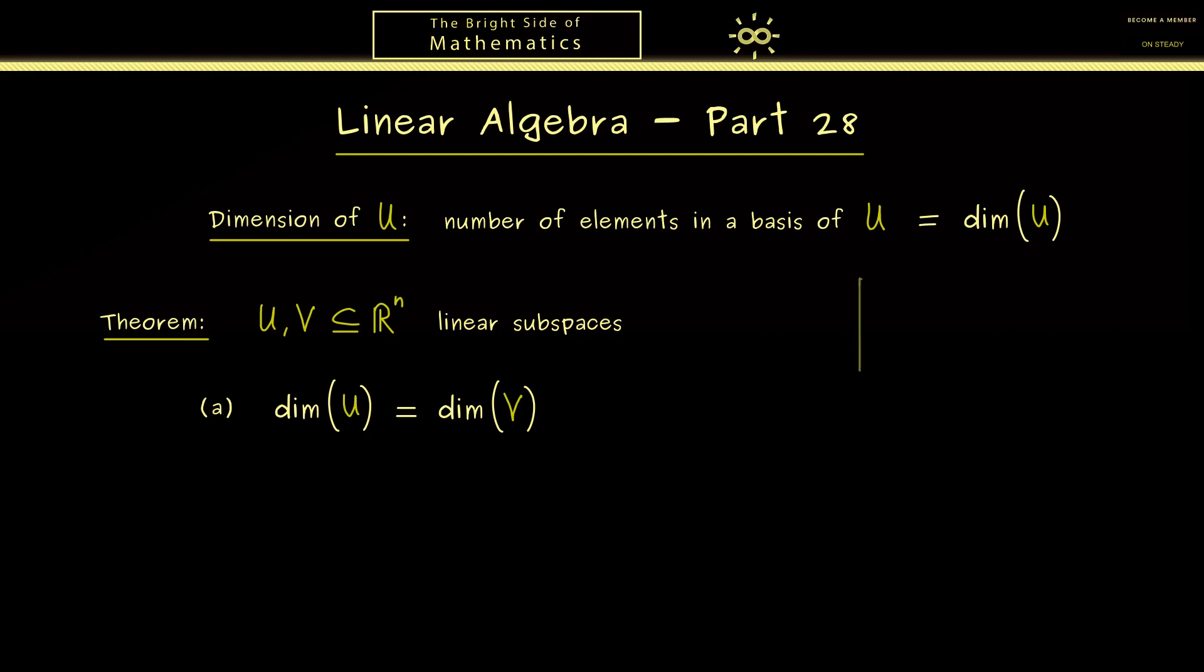So for example you could think of R^2 again where we have different lines. So obviously here not the same subspace but both have dimension 1. However now the claim is that we can transform the one subspace into the other. So this means we find a map we can call F from U to V.